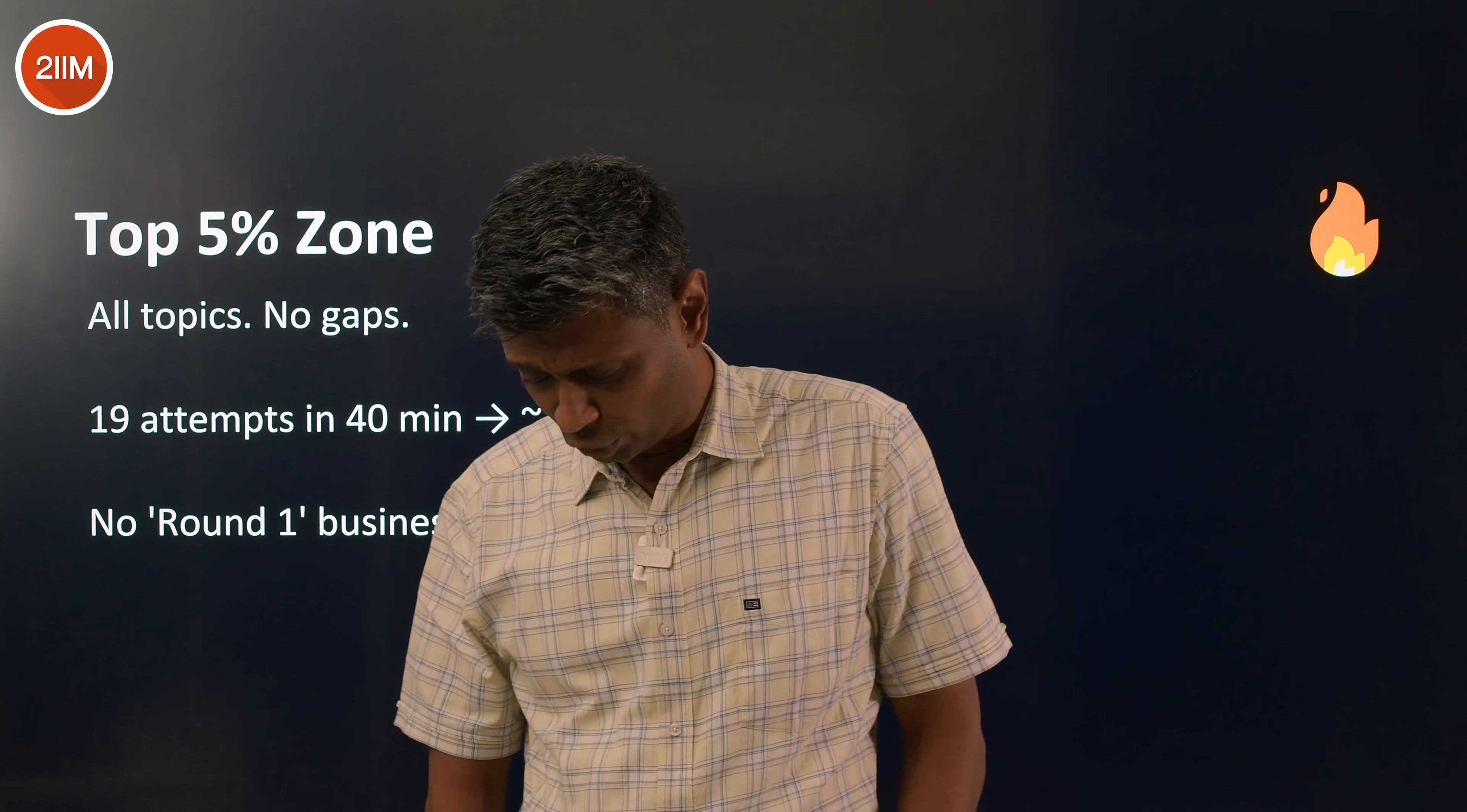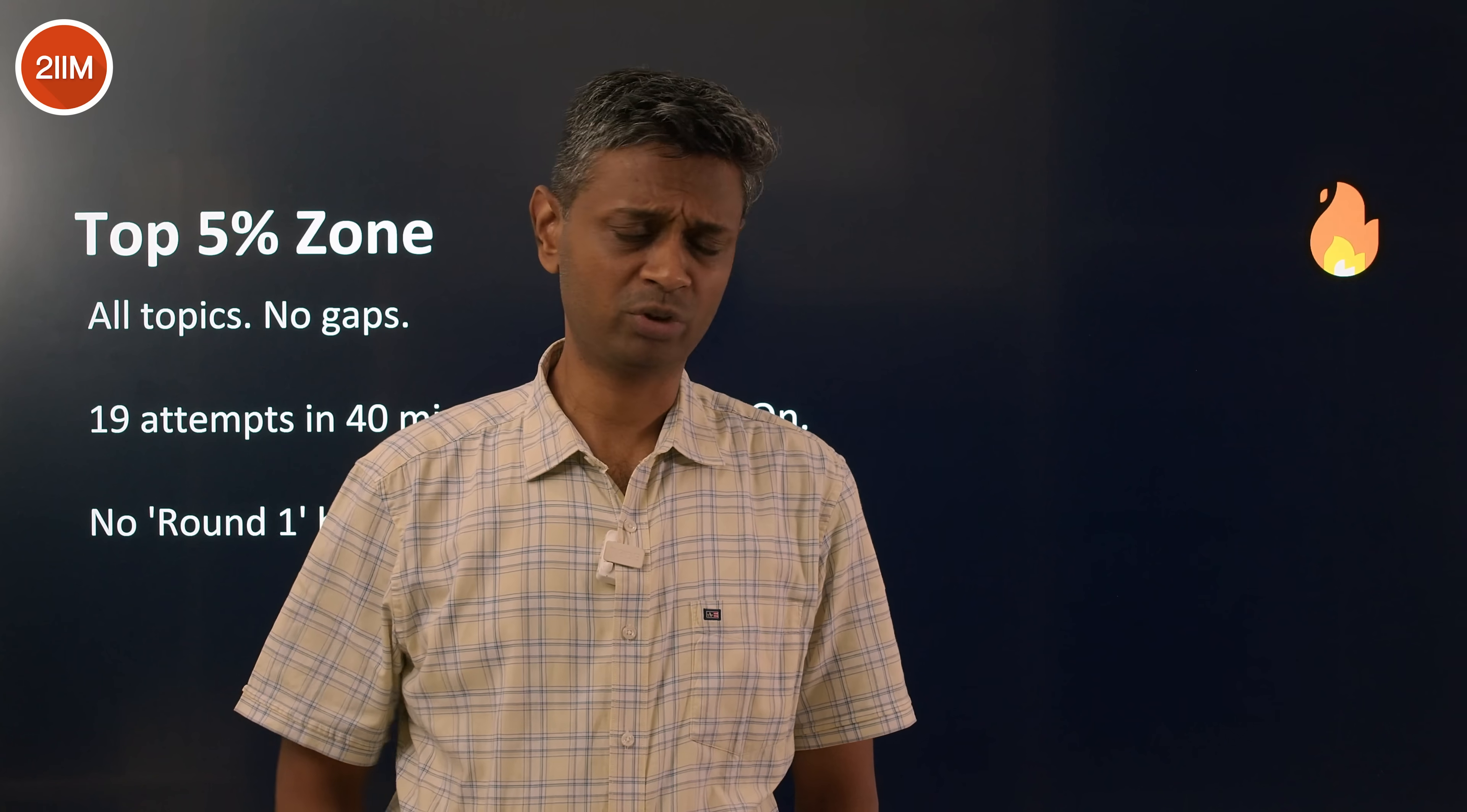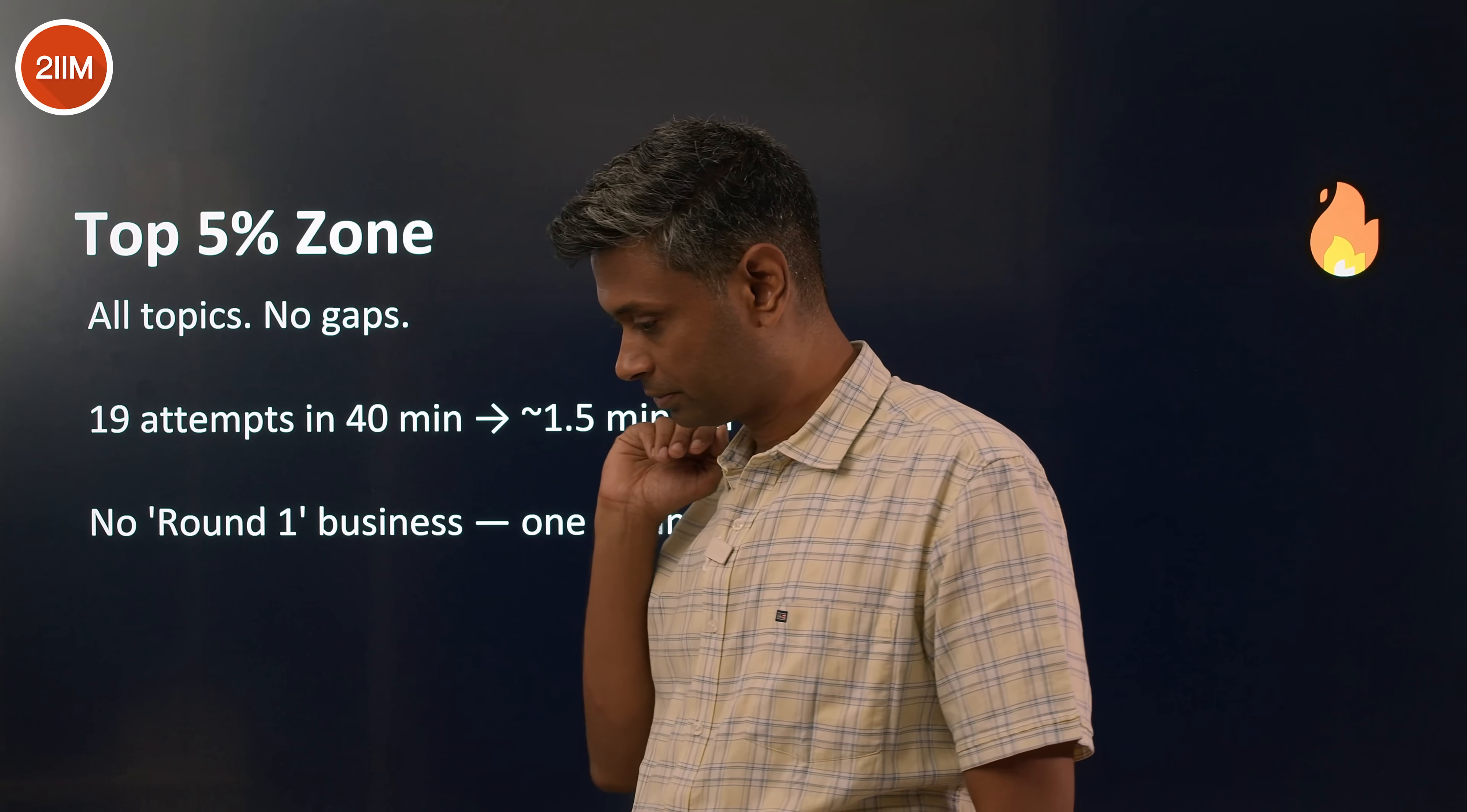Absolute elite. From 40, I want to go to 51, 52. Then no gaps. You're planning to attempt questions at the rate of one and a half minutes per question, because there are going to be two, three questions that take more time. There are going to be two, three questions that you skip after spending time on it. So it's not two minutes per question, but one and a half minutes per question on average. Which means you should be lightning quick.